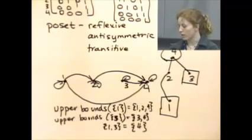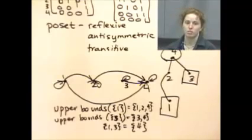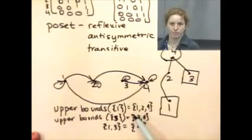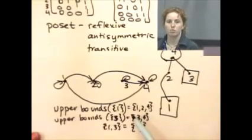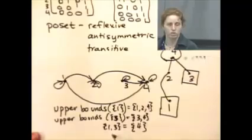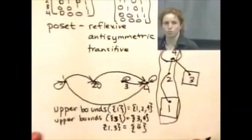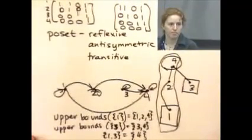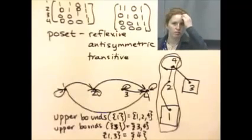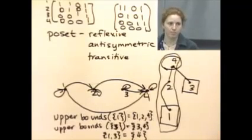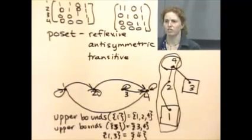Since there's only one upper bound for {1, 3}, that has to be the least upper bound as well. The least upper bound is the minimum of the set of upper bounds — the lowest level in the Hasse diagram among the upper bounds, not necessarily the lowest number. If there's no minimum among the upper bounds, there is no least upper bound. All the lower bound concepts work exactly the opposite way: for upper bounds you go up, for lower bounds you go down.